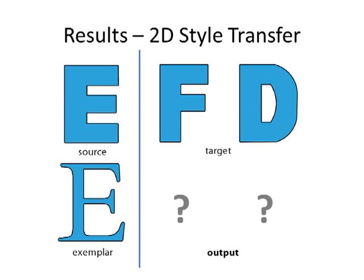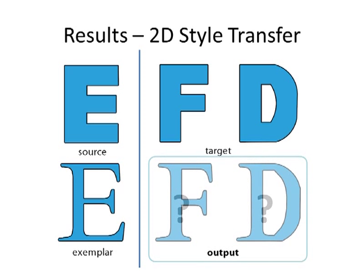and an exemplar letter in a different style. Our algorithm automatically computes the output letters as shown here. The computed analogy transformations conform well with human intuition.